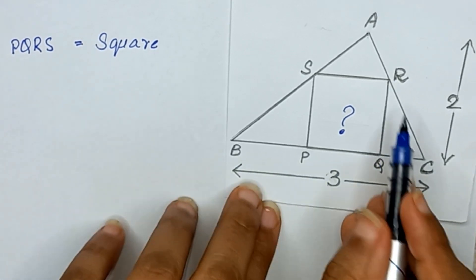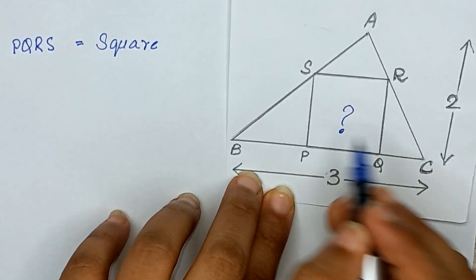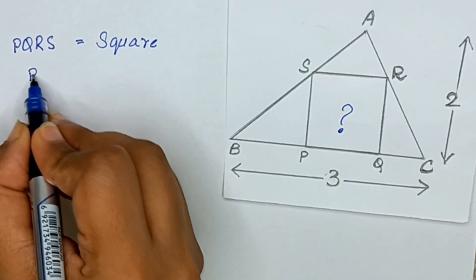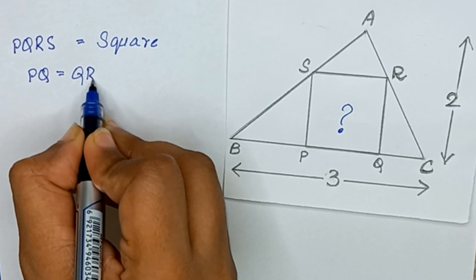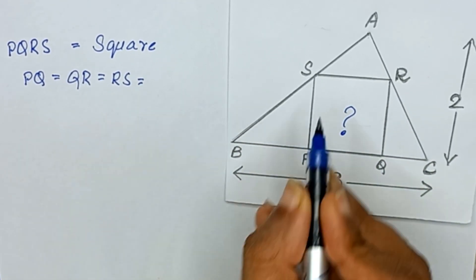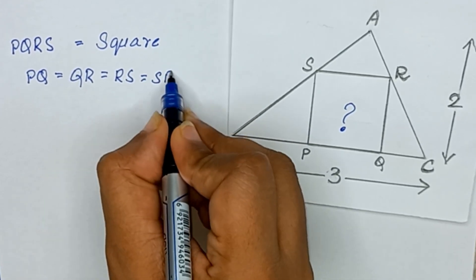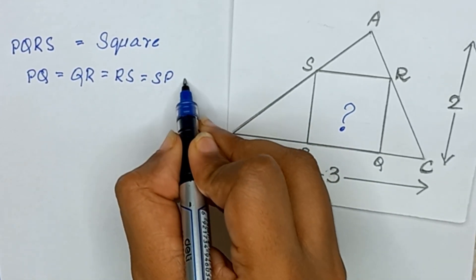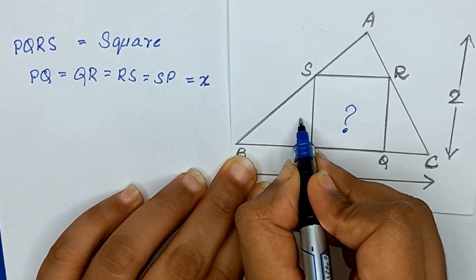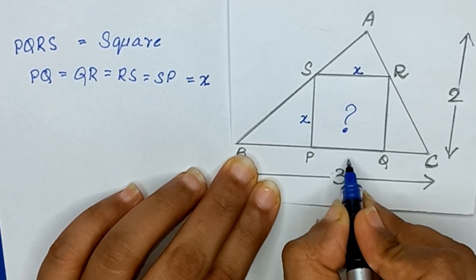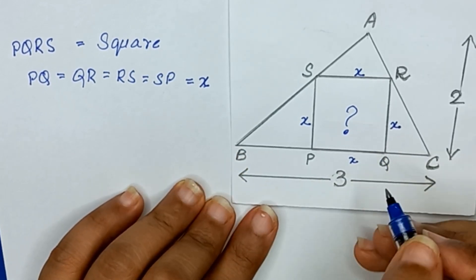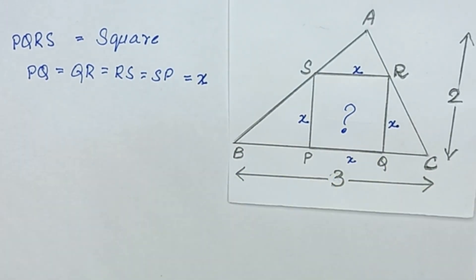Since PQRS is a square, all its sides are equal. So PQ equals QR equals RS equals SP. We suppose each side is equal to x.